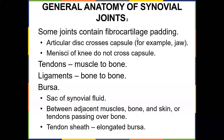Some joints contain fibrocartilage padding. An articular disc crosses the capsule, like in the jaw — TMJ. The menisci of the knee do not cross the capsule. Tendons attach muscle to bone; ligaments attach bone to bone. A bursa is a fluid-filled synovial sac found between muscles, bone, skin, or tendons passing over bone. Bursitis is inflammation of that sac. Tendons are contractile, so tendonitis causes pain with movement, while bursitis causes pain even at rest. If a patient has pain both at rest and with movement, they probably have both.